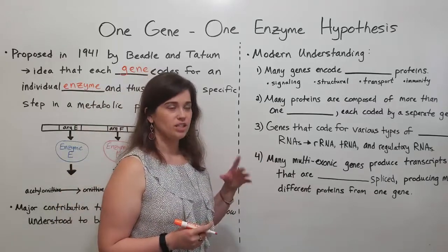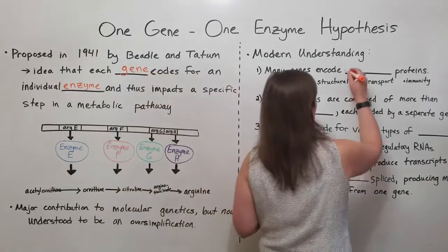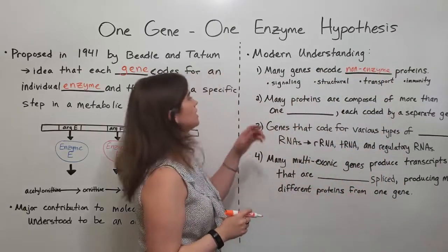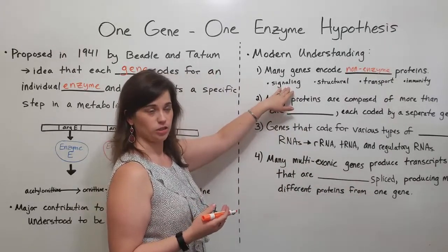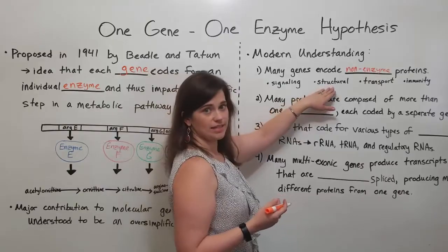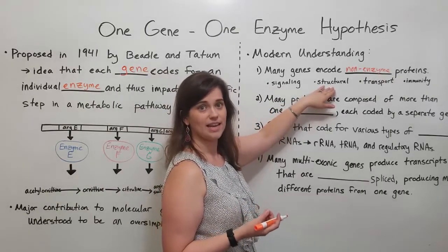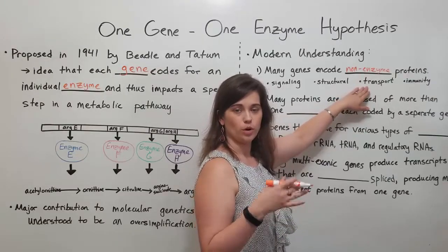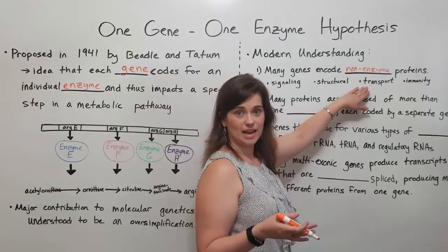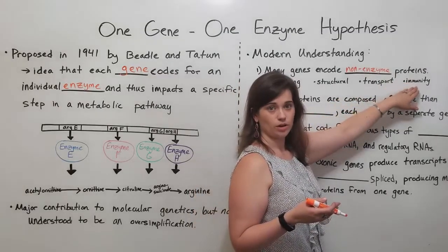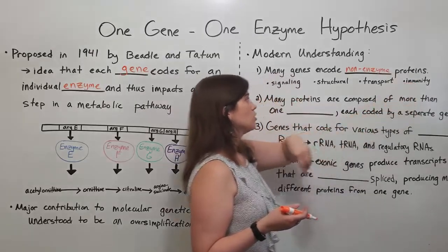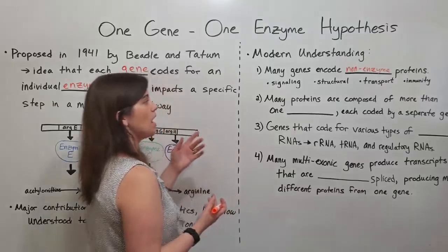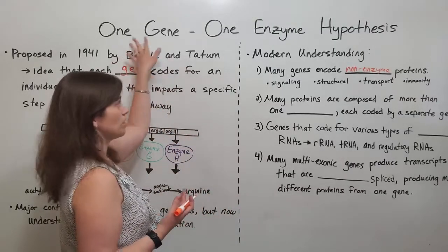For example, we now know that many genes encode non-enzyme proteins — such as insulin, which is a signaling hormone that helps regulate blood sugar; keratin, which is a structural protein that gives strength to hair, skin, and nails; hemoglobin, a transport protein in red blood cells that helps transport oxygen and carbon dioxide between the lungs and the tissues; and antibodies, which are important in immunity and helping us fight off pathogens. These are all proteins coded for by genes but which are not enzymes — a major exception to the one gene one enzyme hypothesis.